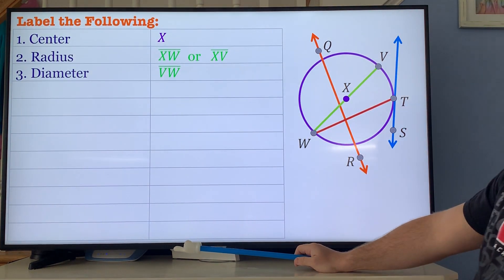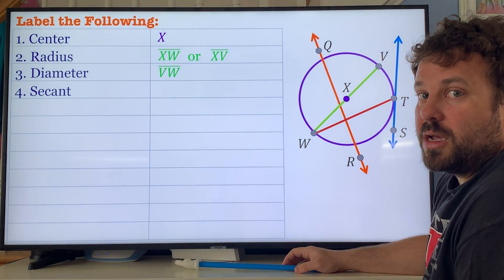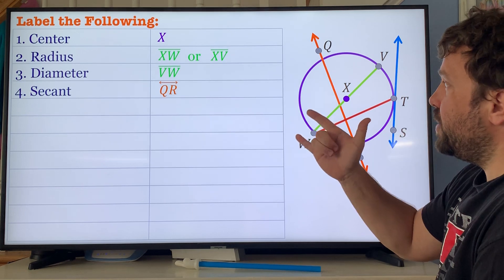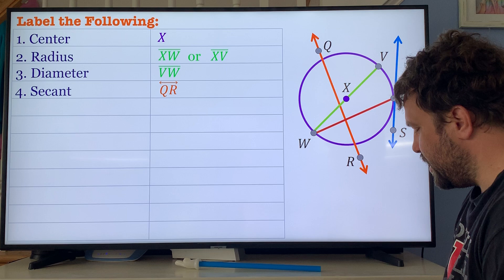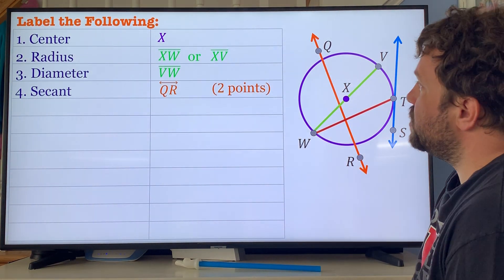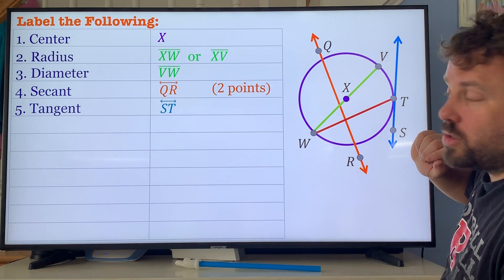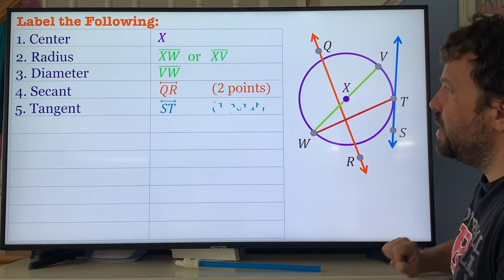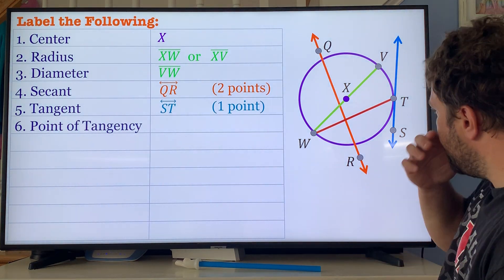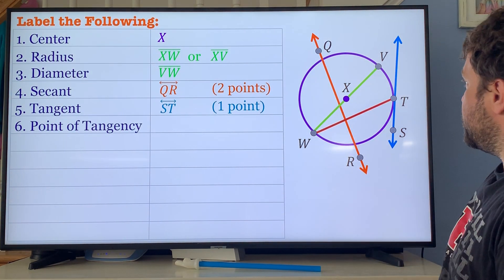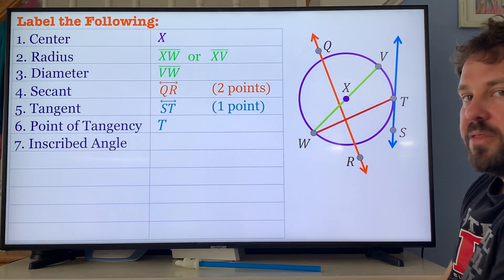Next is secant. A secant is a line that touches the circle in two places, so that is line QR. There's also secant segments we'll get into later. Next is two points, we have a tangent. A tangent is a line that hits the circle in one spot, so that is line ST. One point tangent, two point secant. Next is the point of tangency, that is where the tangent line touches the circle, so it's obviously that point right there which is point T.